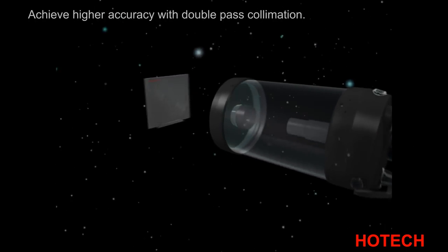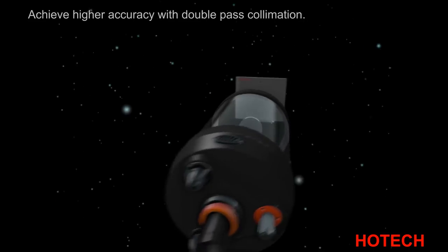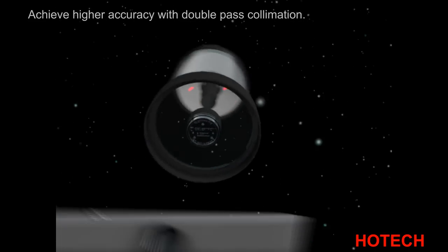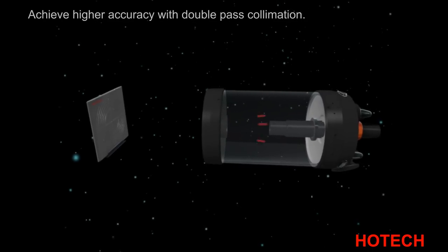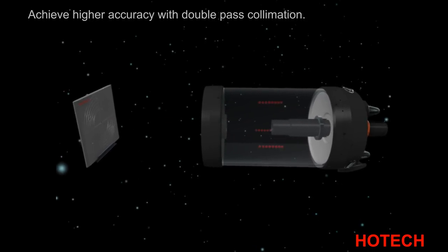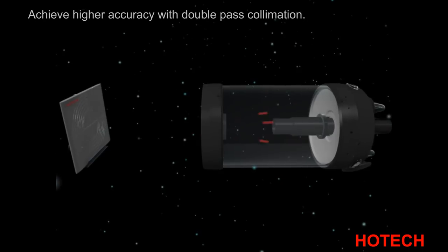Tracing the lasers from the collimator, they pass through the corrector plate to the primary and secondary mirror, then reflect from a mirror installed at the focuser, back to the target on the collimator, achieving a complete and accurate double-pass diagnostic.